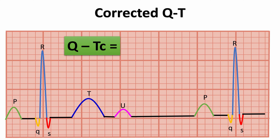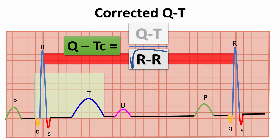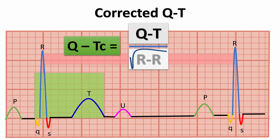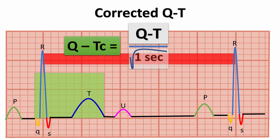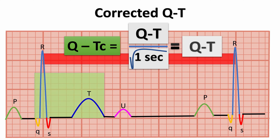The QTc interval equals the QT interval divided by the square root of the measured R-R interval. Since the normal R-R interval at a heart rate of 60 is 25 mm, or 25 small squares, or 5 large squares, which equals 1 second (25 × 0.04 sec = 1 sec), the QTc equals the QT when heart rate equals 60 beats per minute.